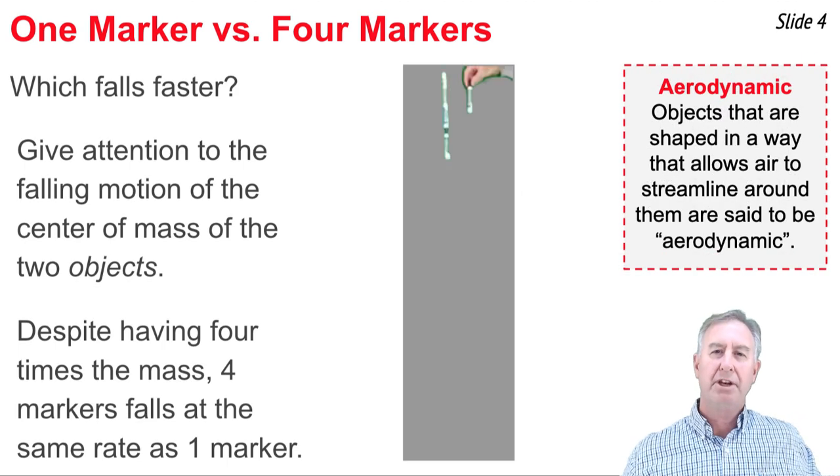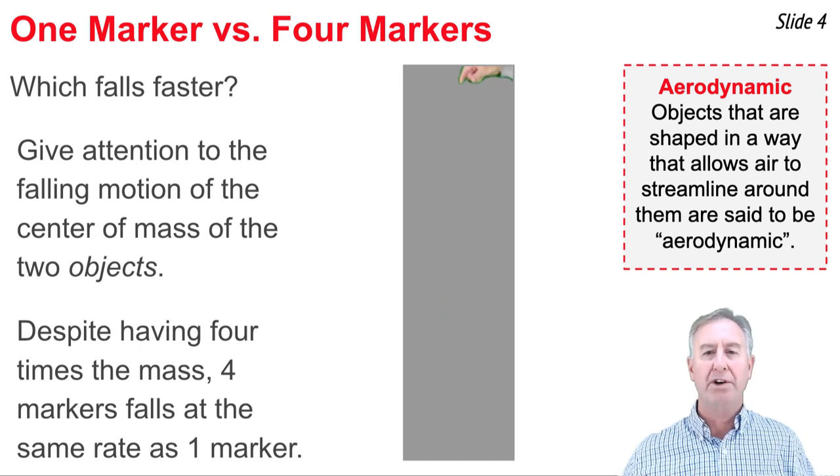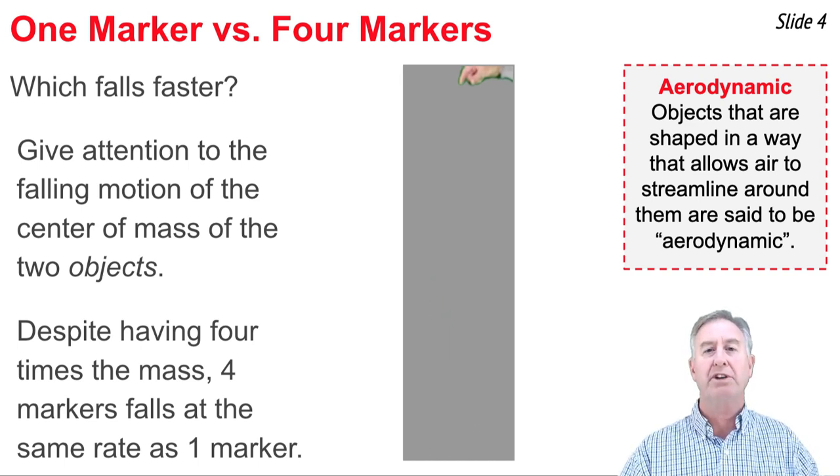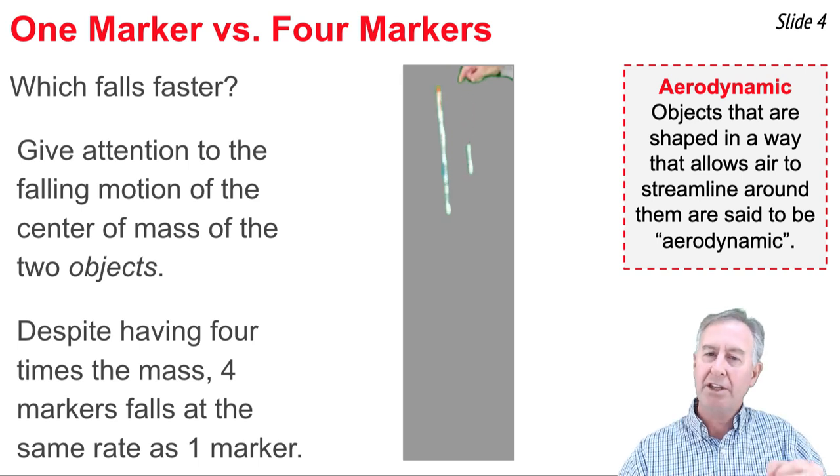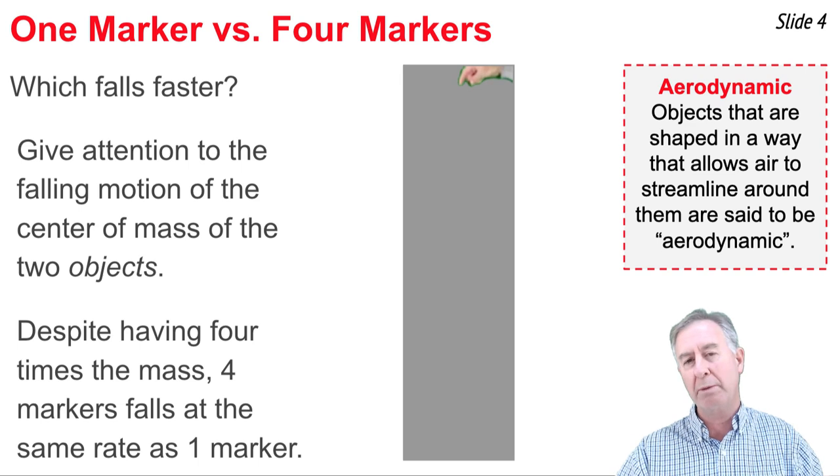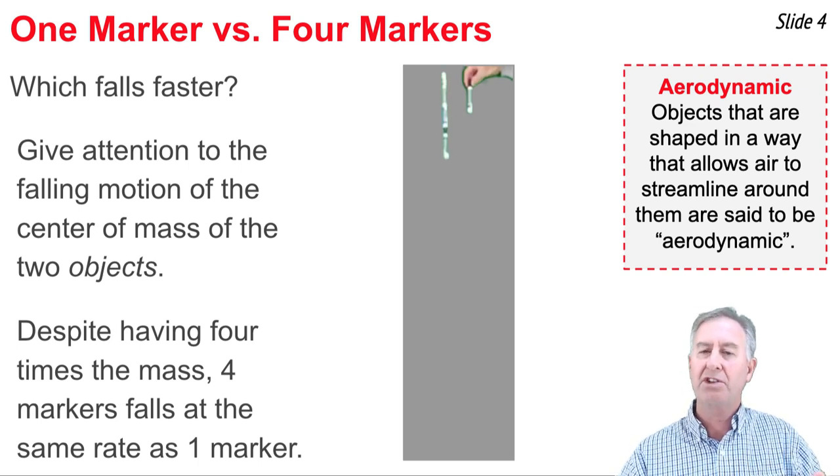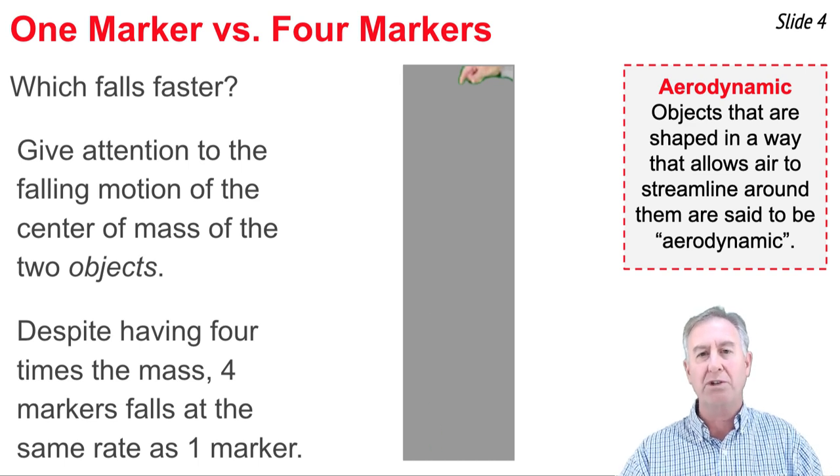I'm going to begin with a demo. What we're going to do is drop four markers and one marker and ask the question, which falls faster, the four marker system or the one marker? Now taped right to the center of the four marker system is some duct tape. You'll see it's gray. And to the one marker system, there's some duct tape.